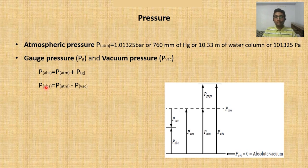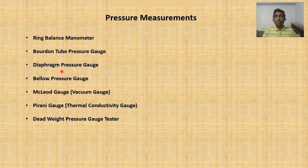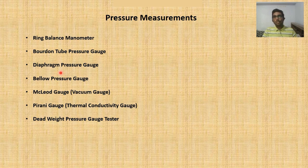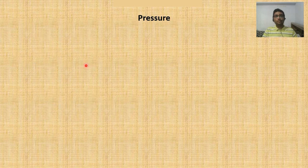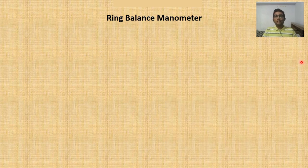These instruments basically measure gauge pressure or differential pressure. Gauge pressure is above atmospheric, so to get absolute pressure you add the atmospheric pressure to the gauge reading. The units used are bar, mm of Hg, meters of water column, Pascal, and Torr — where Torr is the smallest unit in pressure measurement.